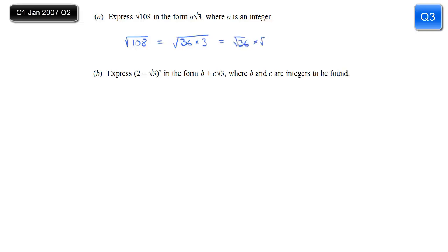So we can split that into two square roots, root 36 times root 3, which is of course 6 root 3. So that's your answer to part a.